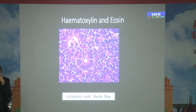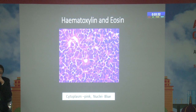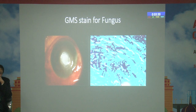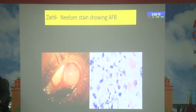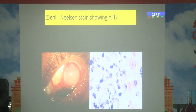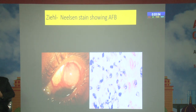In the hematoxylin and eosin stain, the cytoplasm appears pink and the nuclei appear blue. You can see a Flexner-Wintersteiner rosette with a central clear lumen. For fungus, we use the Gomori methenamine silver stain, where fungus appears black against a blue background. The Ziehl-Neelsen stain shows acid-fast pink bacilli against a blue background. This is a conjunctival tuberculoma which was excised, and the specimen on paraffin section with special stains is showing acid-fast bacilli.